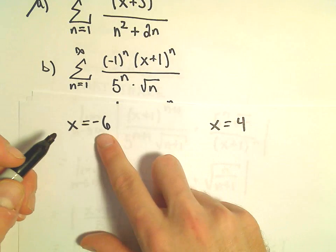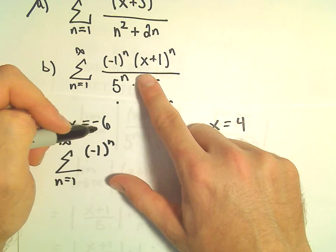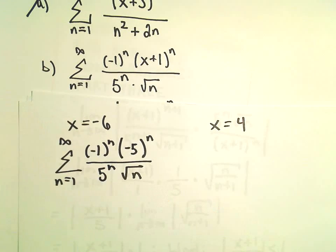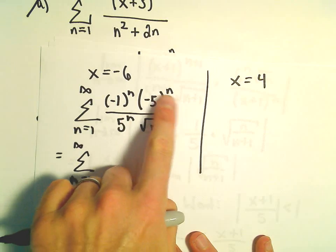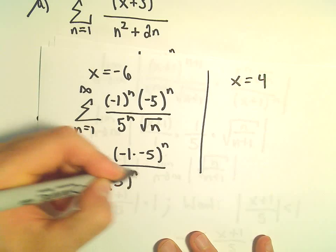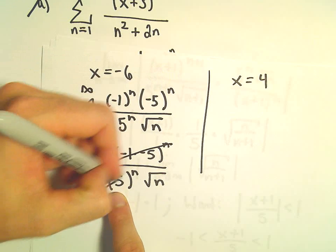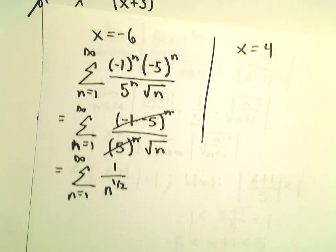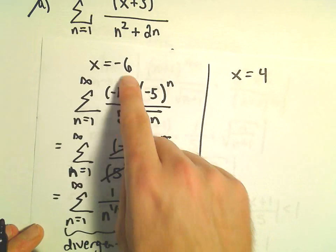When we plug x equals negative 6 into our original series, we get the series from n equals 1 to infinity of negative 1 to the n times negative 5 to the n, over 5 to the n times the square root of n. Since both factors are raised to the n power, we can multiply them: negative 1 times negative 5 is positive 5 to the n. We already have a 5 to the n in the denominator, so those cancel. We're left with the series 1 over the square root of n, which is n to the 1/2. This is a divergent p-series, so the series diverges at x equals negative 6.